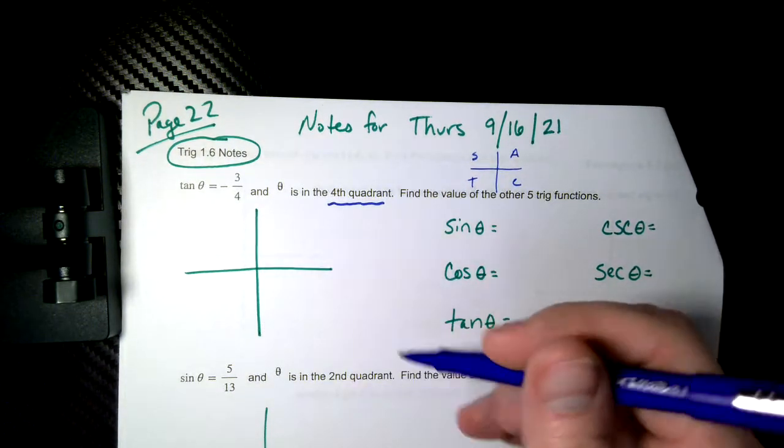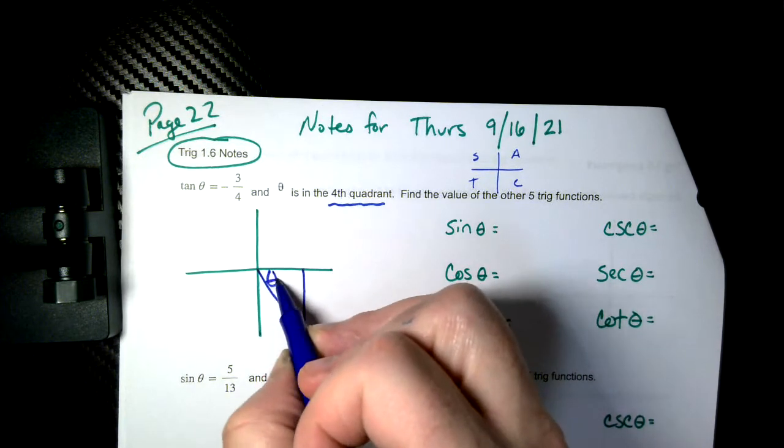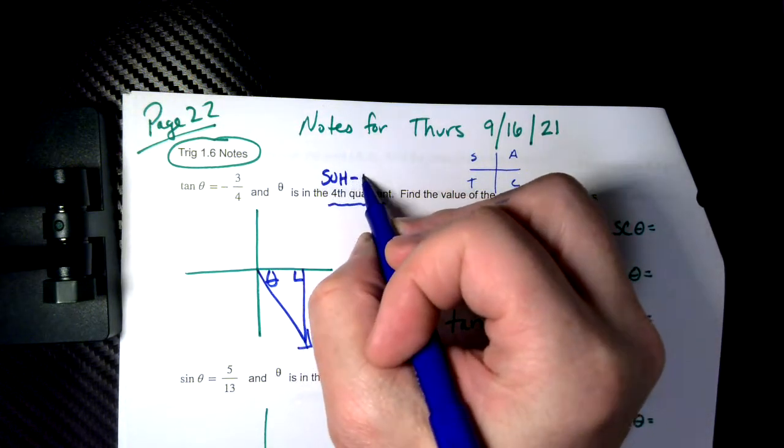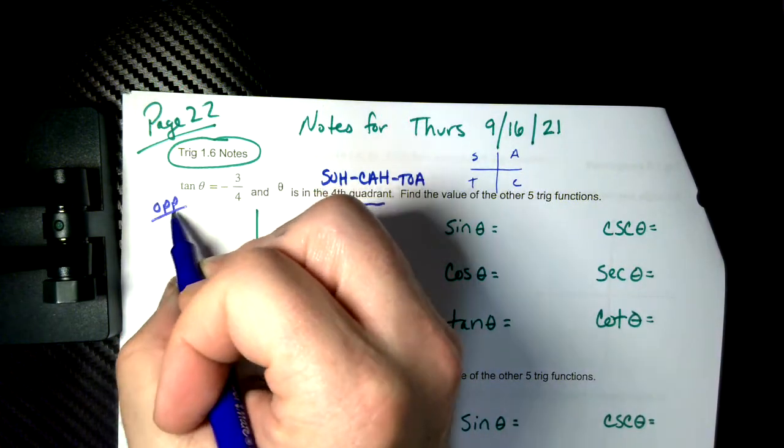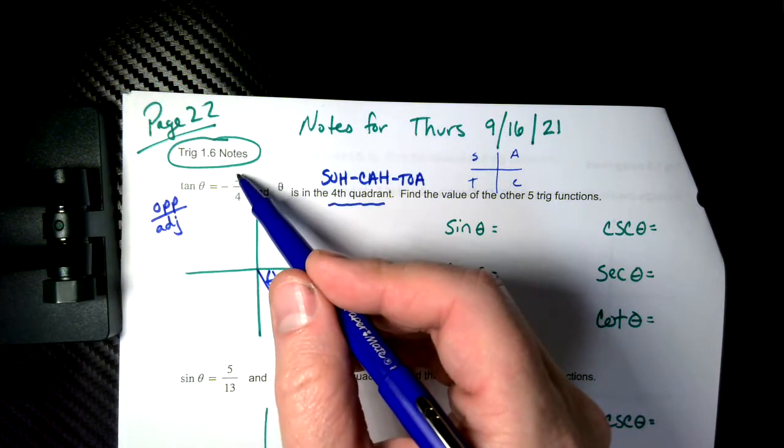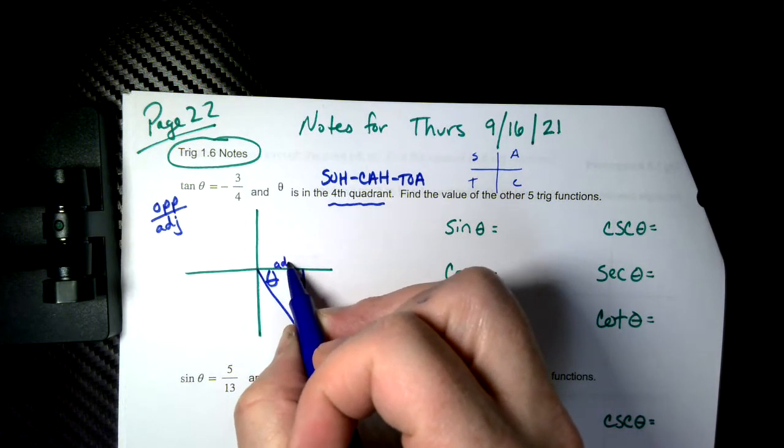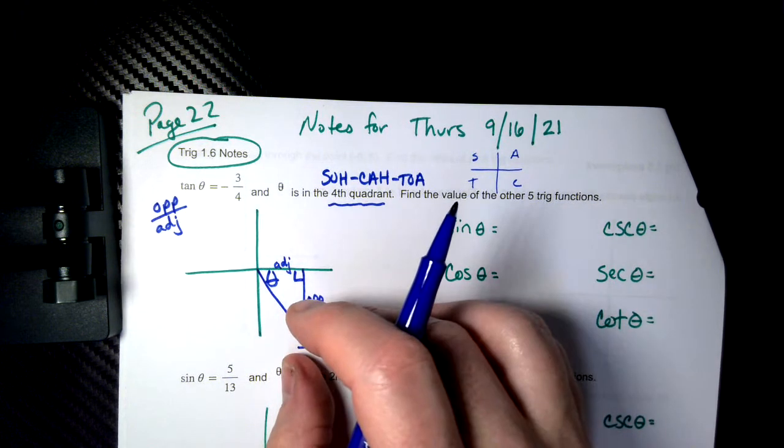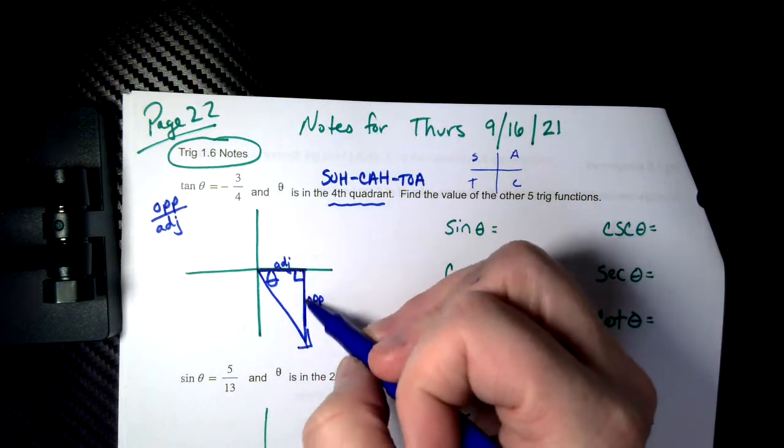So what I want you to do for a problem like this is set up our triangle without the numbers though. Fourth quadrant would have a ray. We make a triangle and theta goes here just like this right angle here. We know that tangent. Let's put this down as a reference. Sokkatoa. We know that the tangent is opposite leg over adjacent leg. It doesn't use a hypotenuse at all.